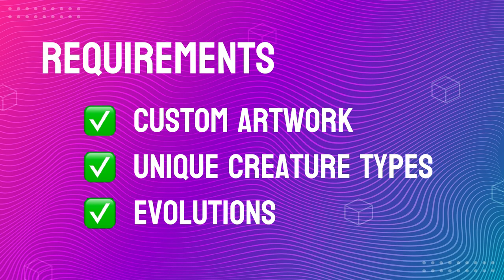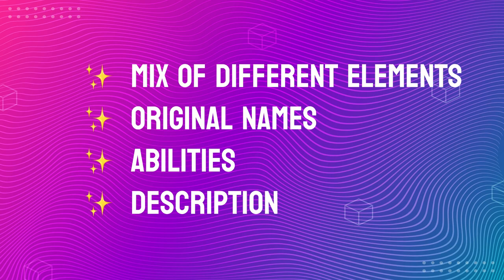Out of these cards I want the artwork, unique creature types, and the ability to evolve. Those are the main difficult problems to solve. There are also additional minor requirements: a nice even mix of all different elements, unique and original names, abilities that make sense — so a rarer Pokemon should have better abilities, implying some kind of point budgeting system — and a unique Pokemon description for the card, a text prose description that adds flavor to the world we're building.